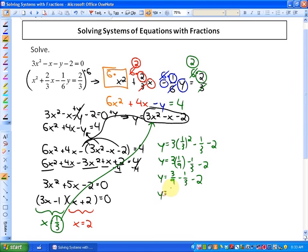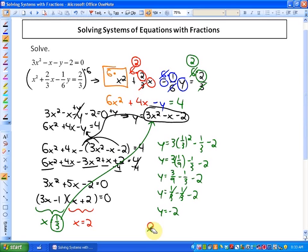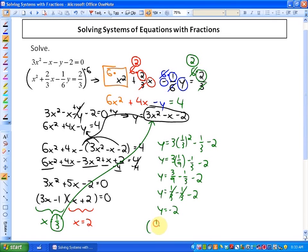If I reduce 3/9 to its equivalent fraction of 1/3, what you'll see is that the 1/3 cancels out, so it's just y = -2. So one of our solutions is when x = 1/3, which is the coordinate (1/3, -2). That's one solution to the system.